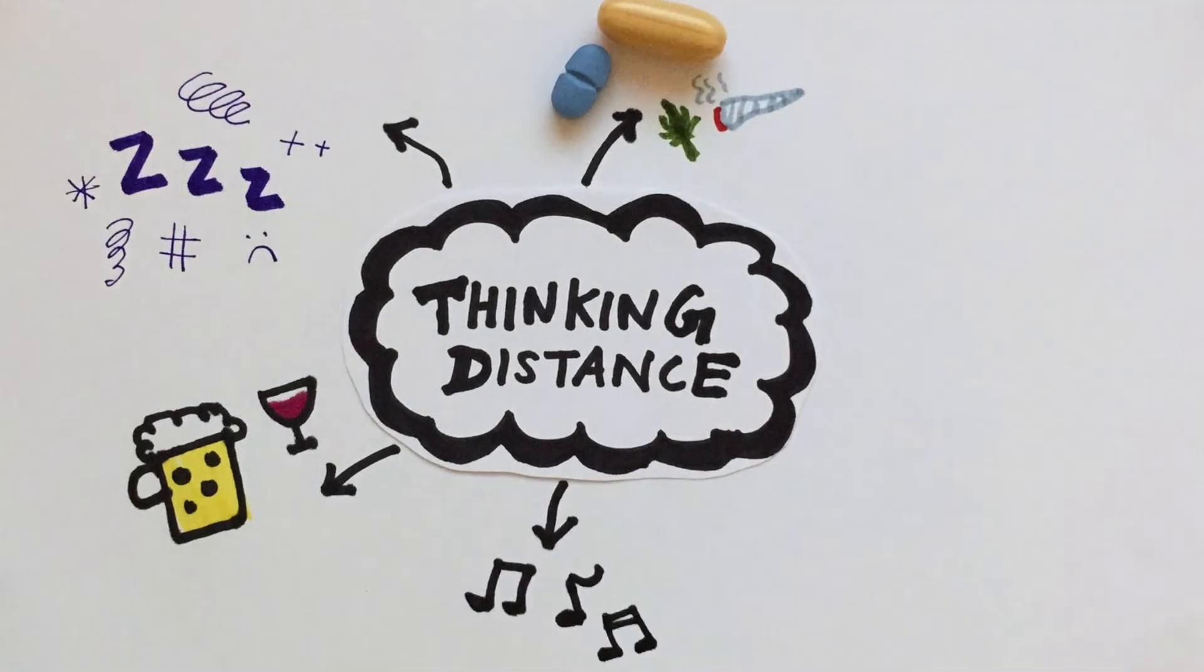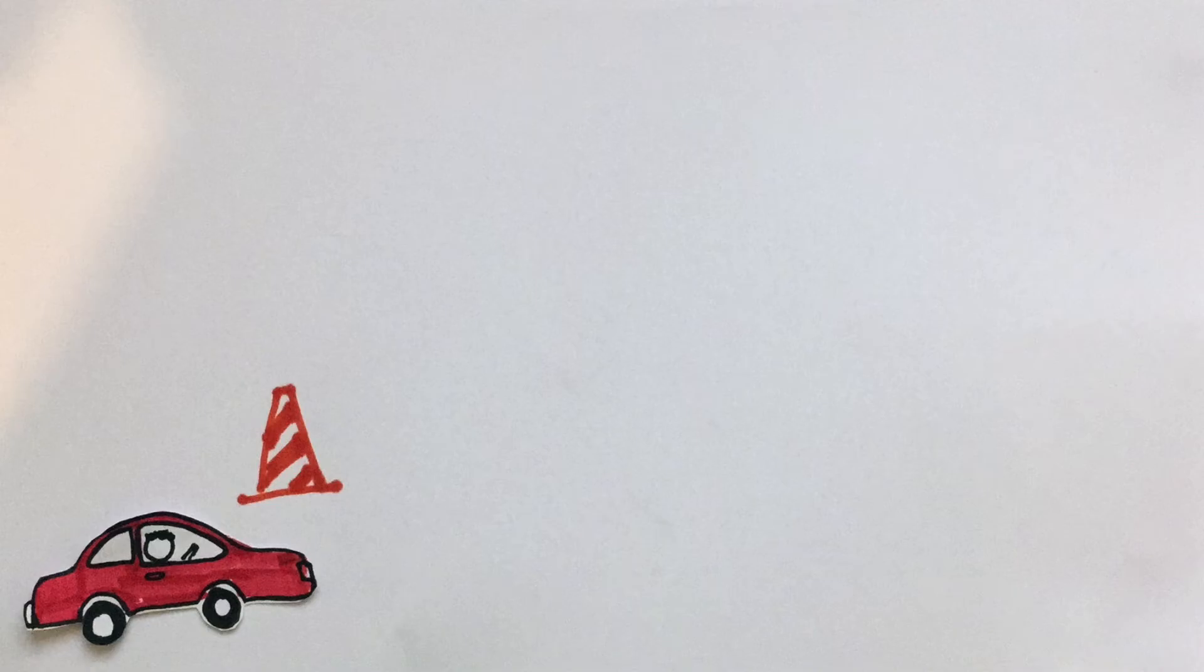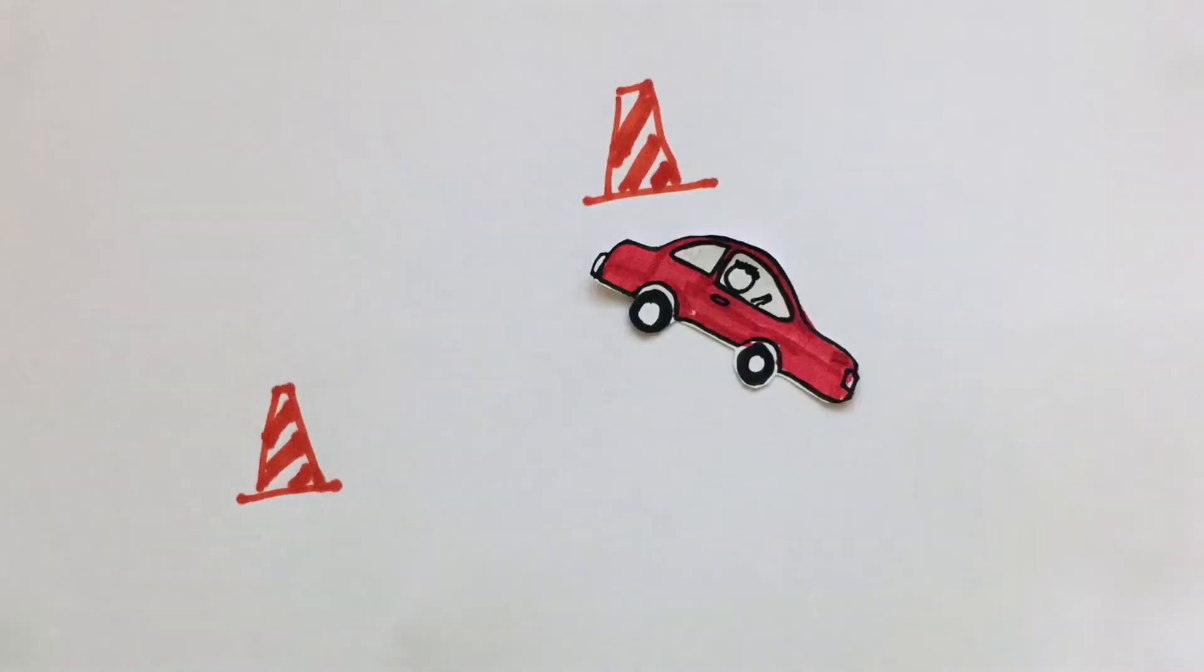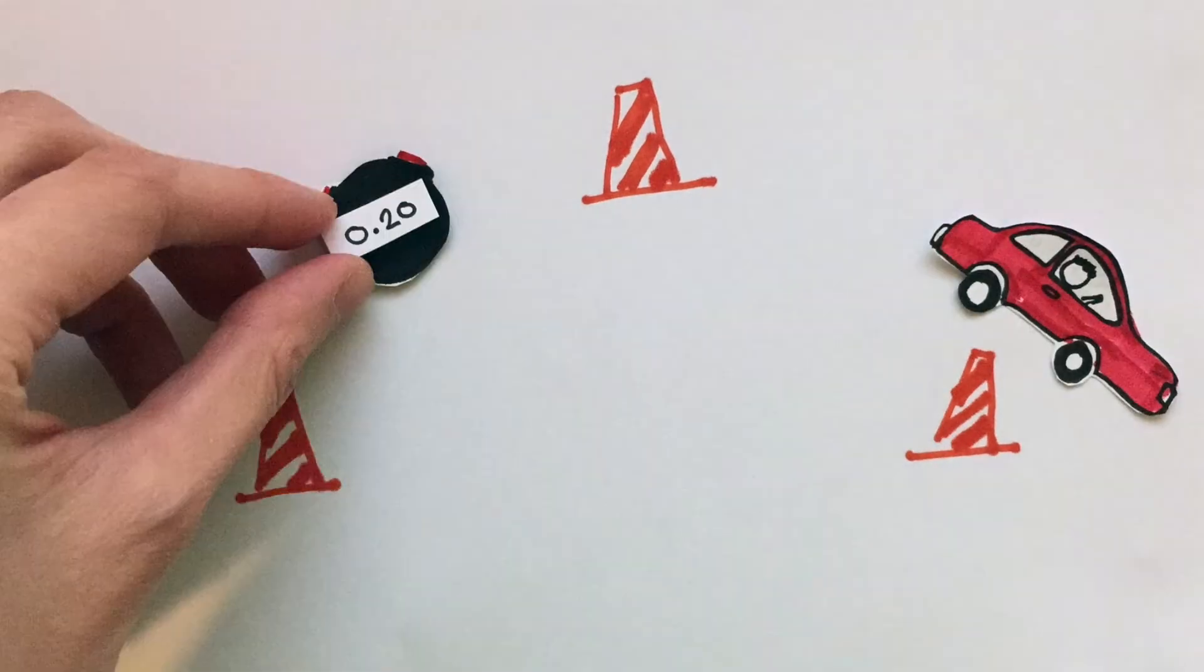And distractions like loud music, and the faster the car is going, or the older the driver is, the worse the driver's reaction time would be. This is why Formula 1 car racers like Lewis Hamilton constantly practice improving their reaction times. They can cut it down to as low as 0.2 seconds.